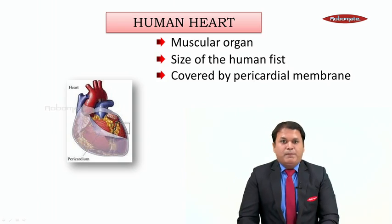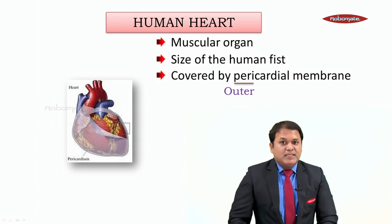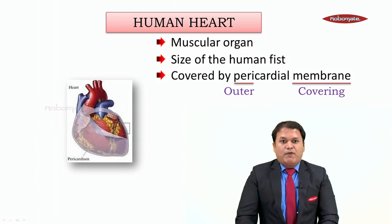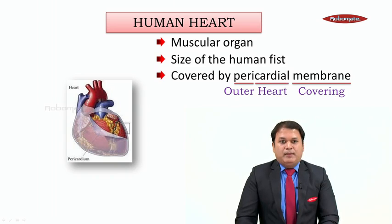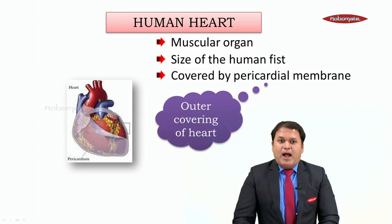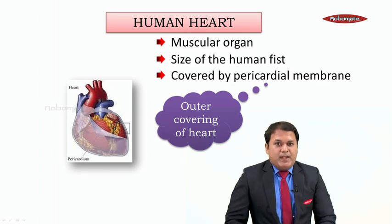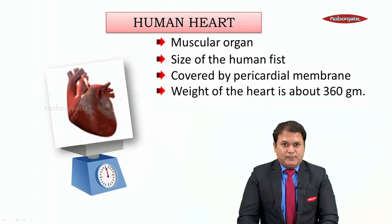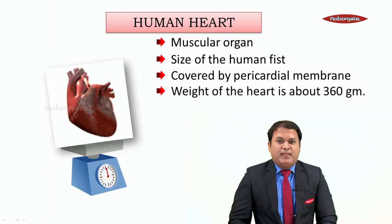Now what do we mean by the word pericardial membrane? The word peri means outer, the word membrane means covering, and the word cardial refers to heart. So it is the outer covering of the heart. As you can see, the heart is protected by the pericardial membrane. Now the weight of the human heart is approximately 360 grams.